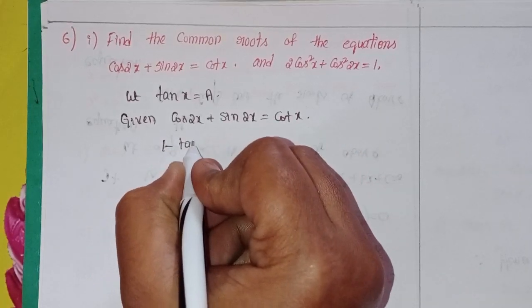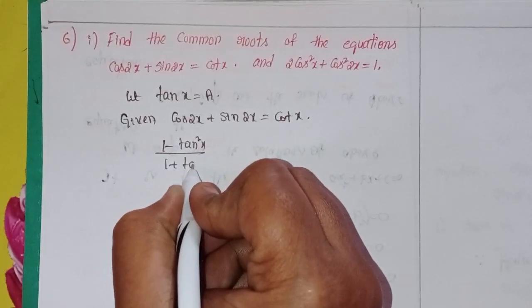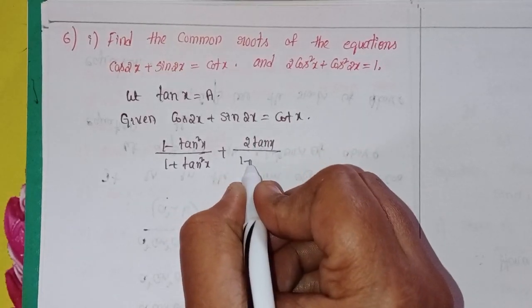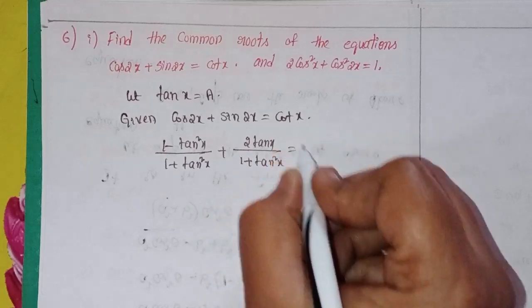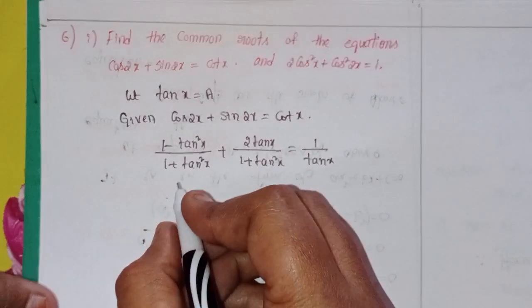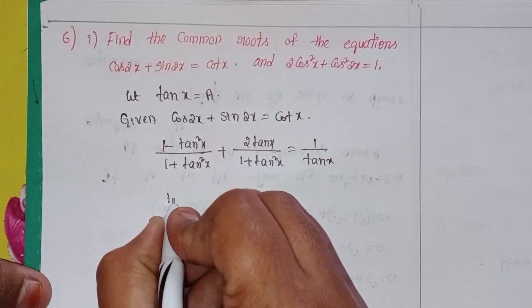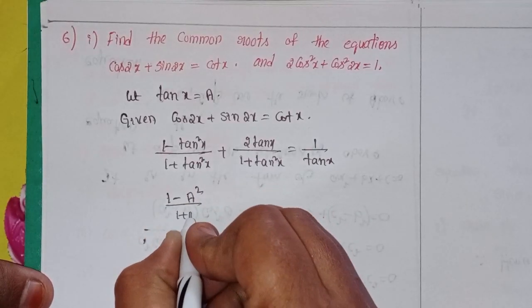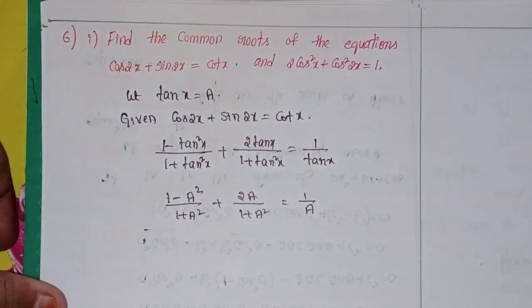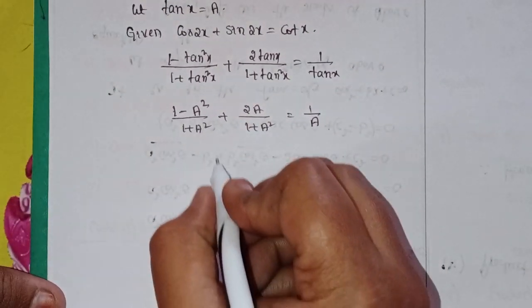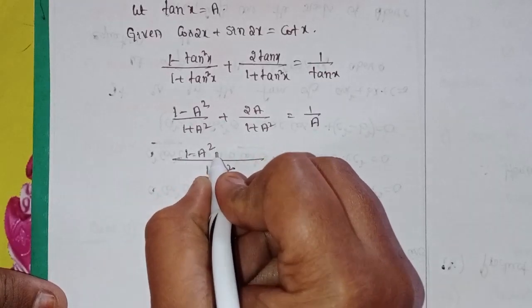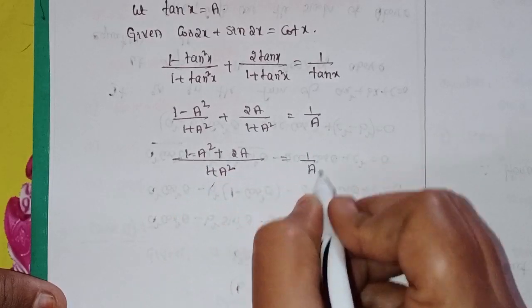So cos 2x is (1 minus tan²x)/(1 plus tan²x), and sin 2x is 2 tan x/(1 plus tan²x). The reciprocal of cot is tan x. So substituting a for tan x: (1 minus a²)/(1 plus a²) plus 2a/(1 plus a²) equals 1/a. Taking LCM (1 plus a²): 1 minus a² plus 2a equals 1/a.